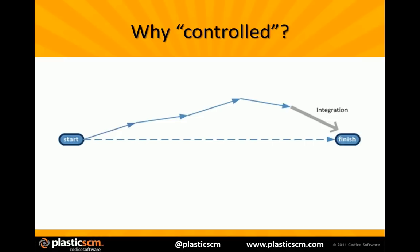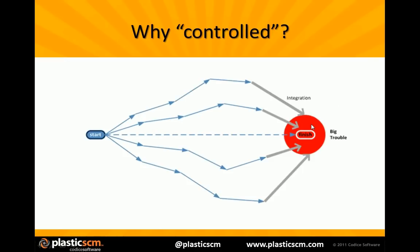Let's think about how the integration process goes on a software project. You have a starting point, a finish point, and then the software evolves and is integrated at the end — that's a very simplistic picture. But what actually happens is different. If you delay the integration, you'll have a big trouble. This is normally known as big bang integration, and it was the root of all the problems in many projects around the world.